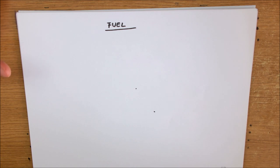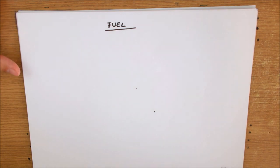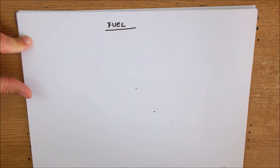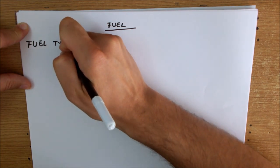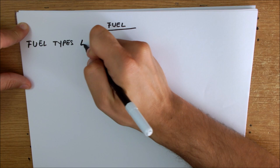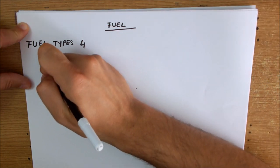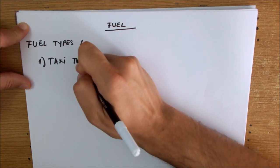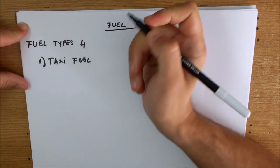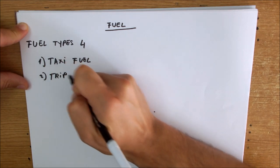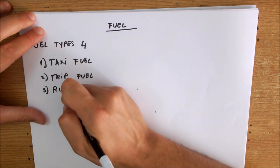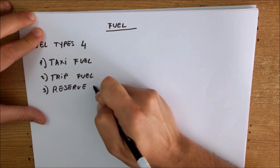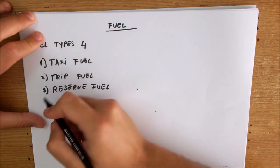I'd like to start with the fuel, which I can see is a very important aspect of every flight. We will discuss the fuel types for commercial operations. We have four fuel types: the taxi fuel, the trip fuel, the reserves fuel, and the extra fuel. We'll discuss each one in detail as we go along.